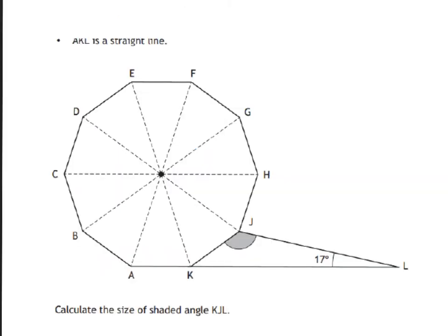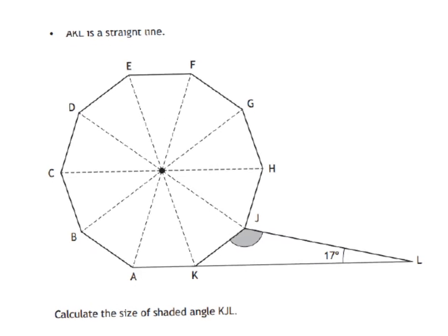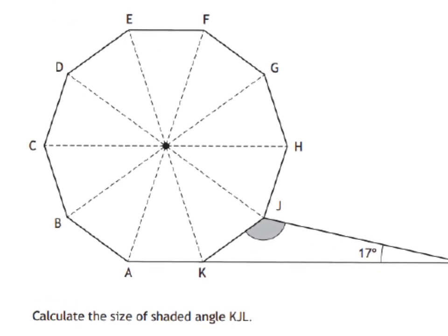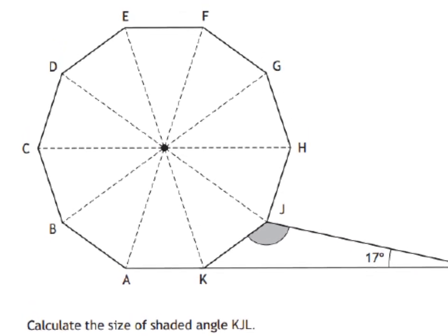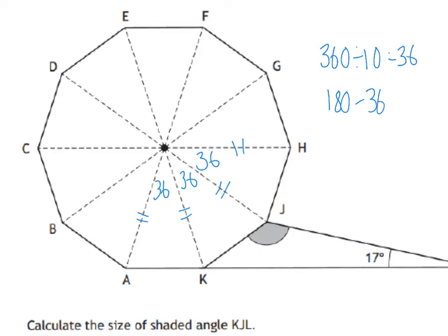Here is another one. It's not necessarily to do with a circle, but it is still to do with angles and triangles. We are after the shaded angle. We have a 10-sided shape. So we're going to get the internal angles first by doing 360 divided by 10, which is 36. So these angles in here are 36. Again, these are all isosceles — these diagonals are all the exact same length. So 180 take away 36 is 144, and half of 144 is 72.